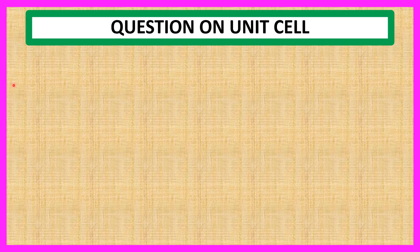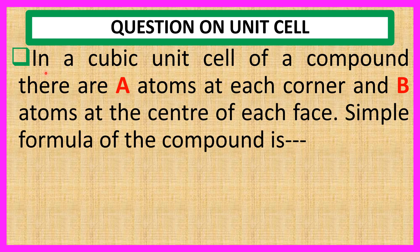Welcome everyone. Question on unit cell. In a cubic unit cell of a compound, there are A atoms at each corner and B atoms at the center of each face. Simple formula of the compound is: